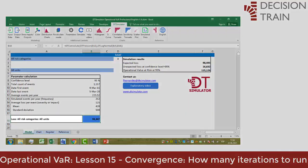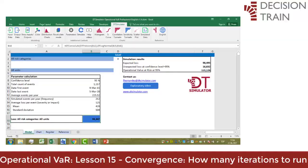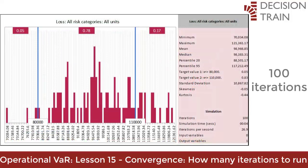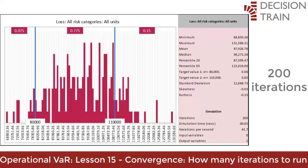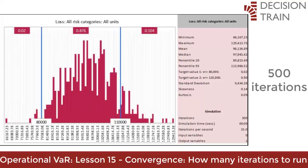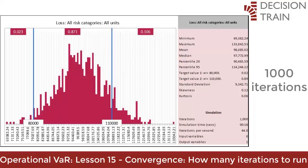We focus here on the only output variable, the loss cell in B18. If you were to run only 100 iterations, your histogram would look like this. With 200 iterations — the maximum number allowed in the student version — the histogram begins to smooth out. The gaps start to fill in and you start to see a more stable and robust representation of your simulated output. 500 iterations will produce the following histogram. 1,000 iterations would produce the following histogram.